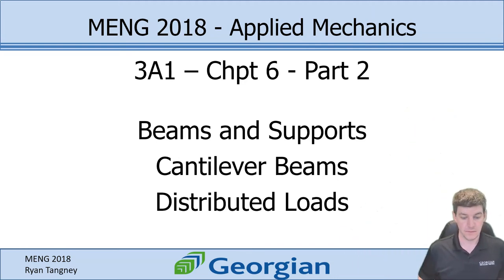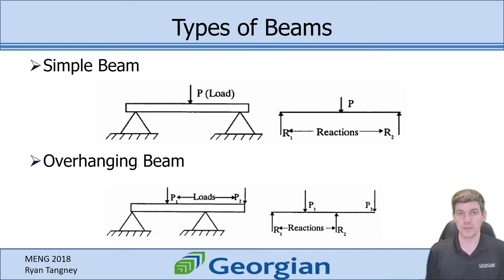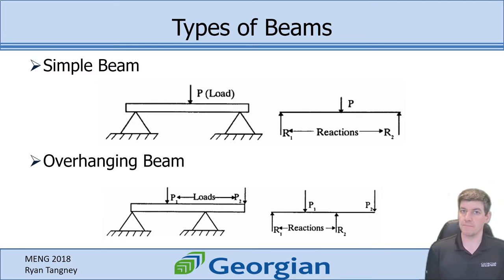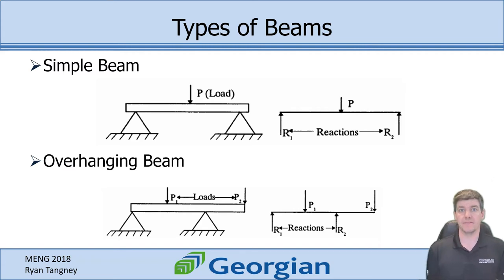We have different types of beams. In our last section we looked at a couple. We had one known as a simple beam or simply supported beam, which usually looks like two supports with some sort of loads in the middle. We also did a question with a bearing and a shaft, which was an example of an overhanging beam, where we had loads that weren't within the two reactions but hung over.